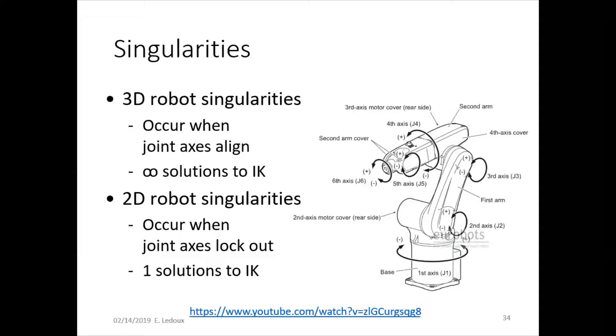In two dimensions, robot singularities occur when the joint axes lock out. So in that situation, for example, it would be like a two-link robot that suddenly becomes like a one-link robot because the joint in the middle is all stretched out. And that has only one solution to the inverse kinematics problem.